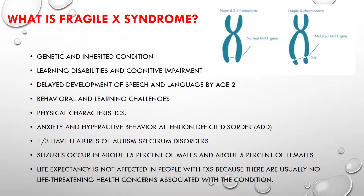This protein is critically important for experience-dependent neural development, particularly for the maturation of synapses and synaptic pruning in the developing brain. Common results of Fragile X in children are learning disabilities, cognitive impairment, and delayed speech and language by age 2. There can also be behavioral and learning challenges, as well as various physical characteristics.